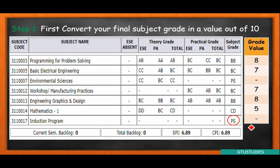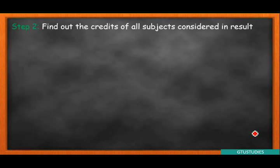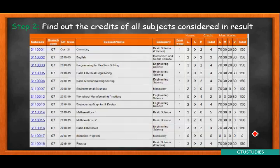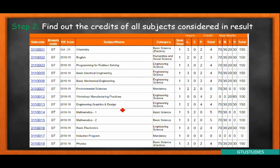તો આજ grade value ઉપર based SPI કઈ રીતે calculate કરવાનો, તે આપડે step 2 — એટલે કે GTU ની marksheet ઉપર — grade value multiply કરવાનું છે credit સાથે.